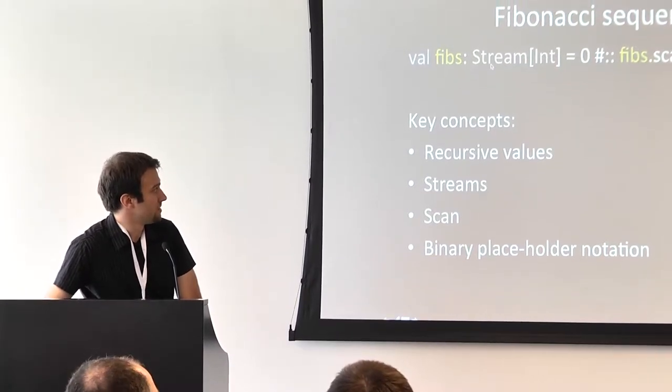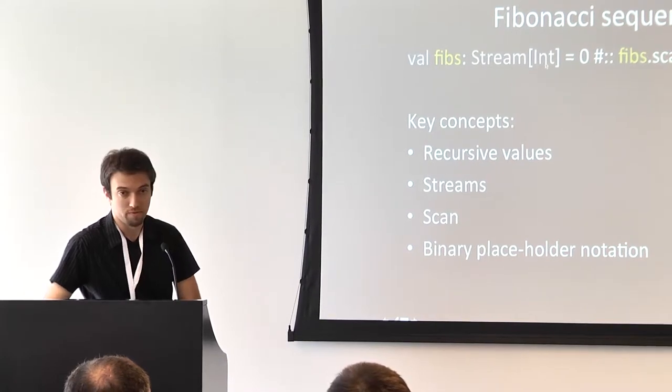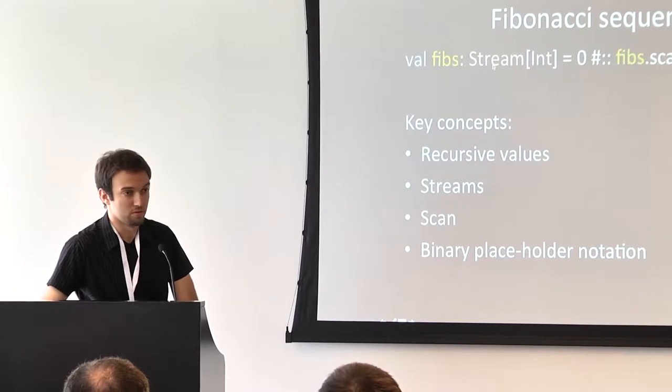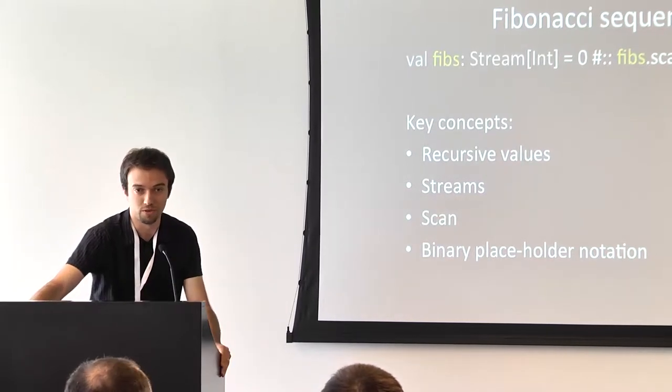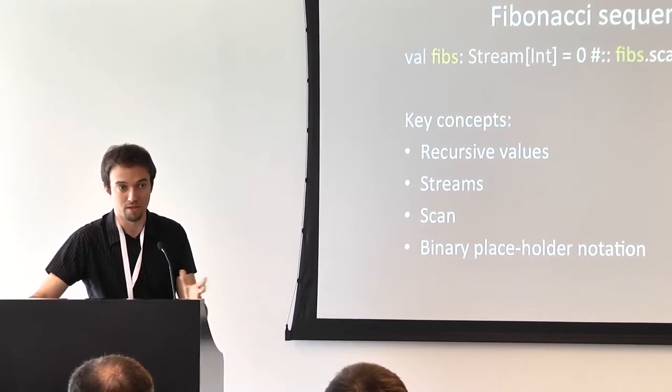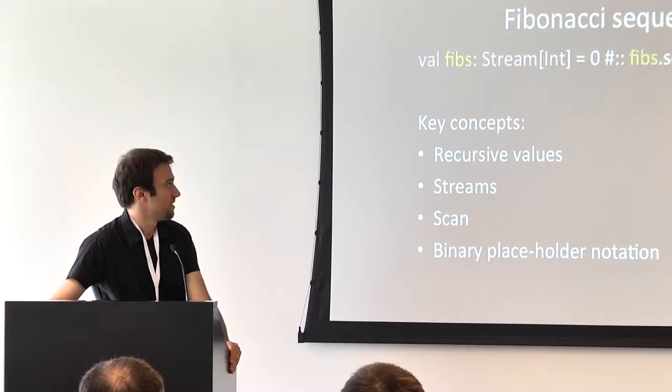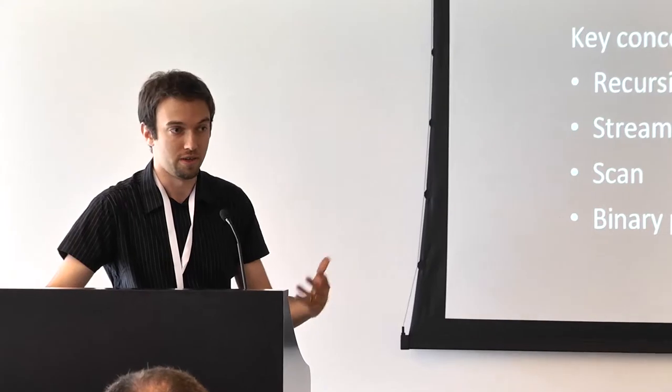In this case, we basically produce a stream of Fibonacci numbers. The other important thing about this example is that we use recursive values, which are not different than recursive functions. When you call something or access a member from the outside, it doesn't really matter if it's a function or a value — it just changes the moment at which it is materialized and evaluated. Here we see a not-very-human-readable operator that joins and combines two streams — it just puts a value in front of a stream.